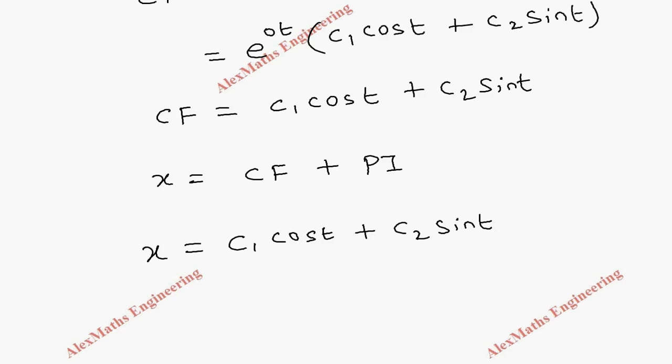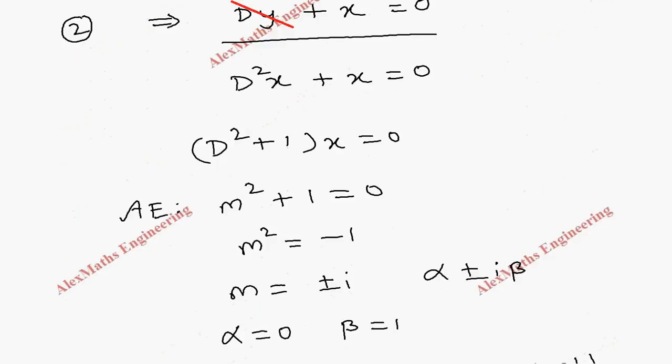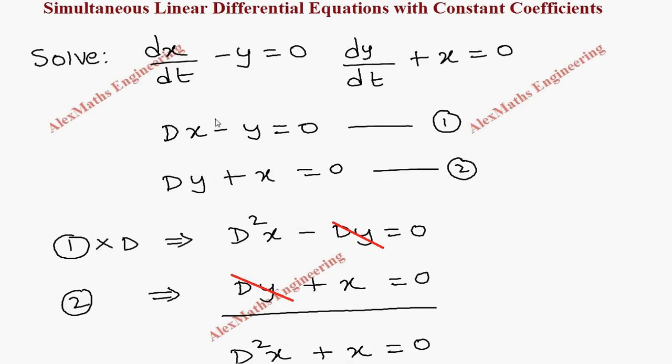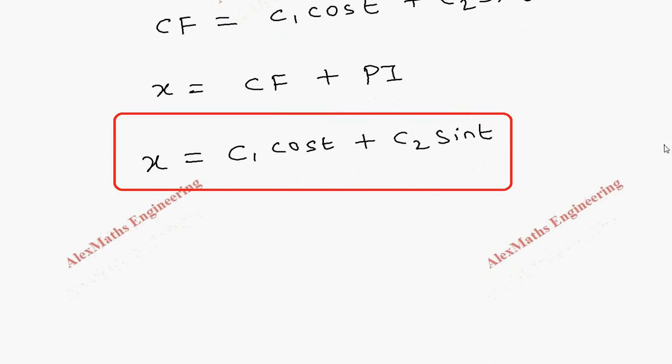So we got one part of the solution. Now, we have to get the another solution y. For that, we can use any of the equations. Suppose, if I use the first equation from here directly, I can get y. So dx/dt - y = 0. So I have to get dx/dt from this. Already, we got a solution. Now, differentiating with respect to t.